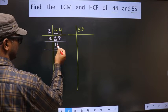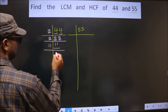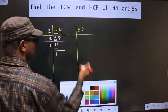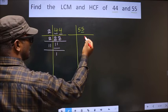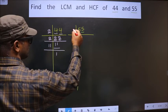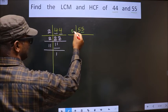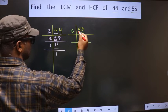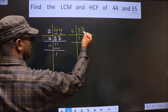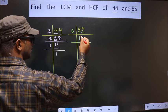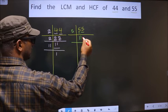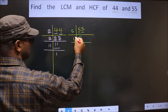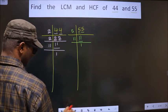Now here we have 11. 11 is a prime number, so we take 11 — 11 times 1 is 11. Now for 55, the last digit is 5, so we take 5 here. 5 once is 5. We have 11 again. 11 is a prime number, so we take 11 once — 11 times 1 is 11.